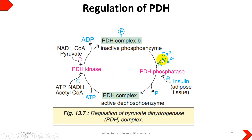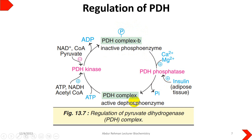Certain factors help in the dephosphorylation of the PDH complex, returning it to its active form. High amounts of calcium from muscular activity, higher amounts of magnesium, or high amounts of insulin in adipose tissues signal pyruvate dehydrogenase phosphatase to remove the phosphate group from the PDH complex, making it active and increasing the conversion of pyruvate to acetyl-CoA.